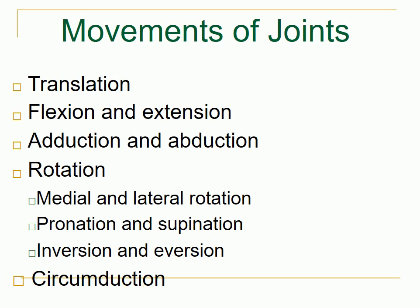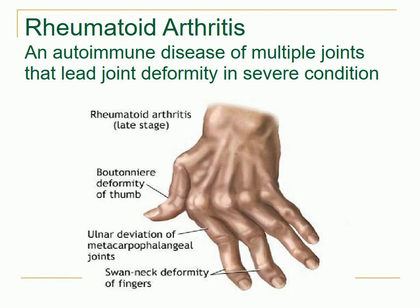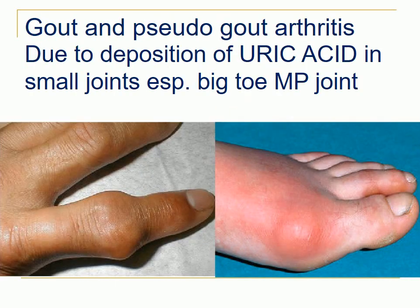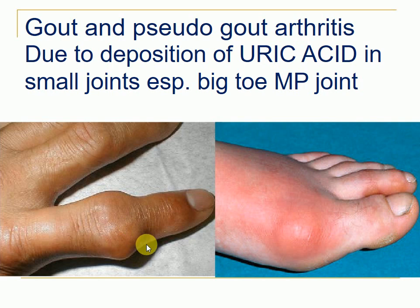Clinical applications: rheumatoid arthritis is an autoimmune disease of multiple joints that leads to joint deformity. We also have gout and pseudo-gout arthritis — gout involves accumulation of uric acid in small joints, especially the big toe, causing inflammation and redness.